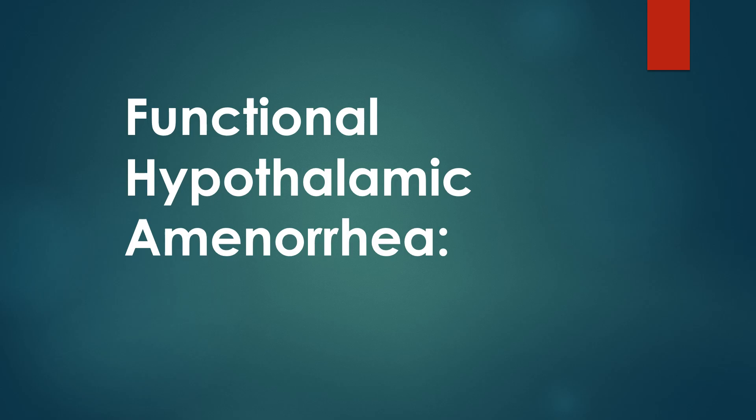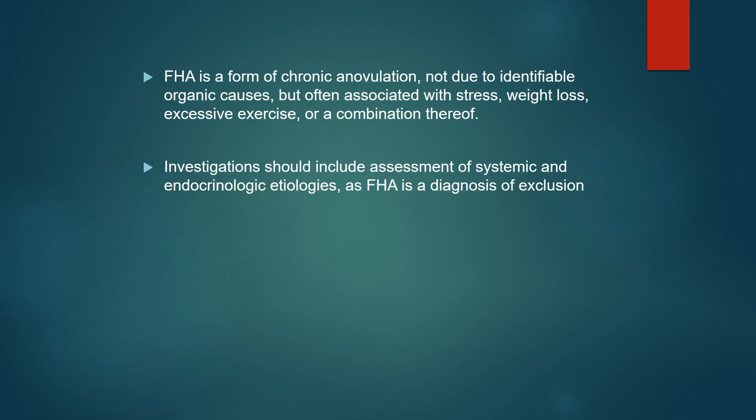Functional Hypothalamic Amenorrhea is a form of chronic anovulation due to identifiable organic causes but often associated with stress, weight loss, excessive exercise, or a combination of factors.